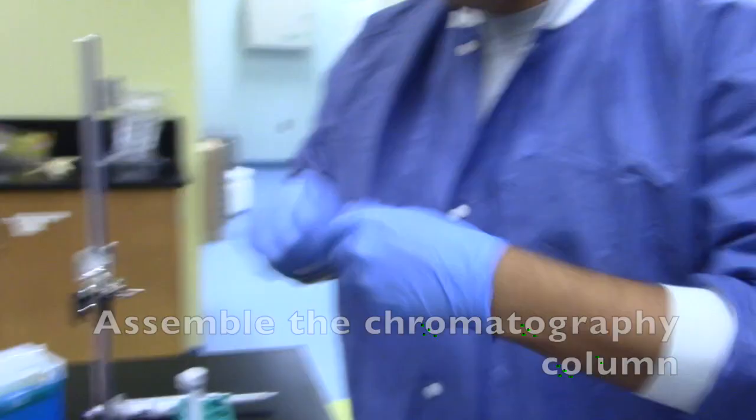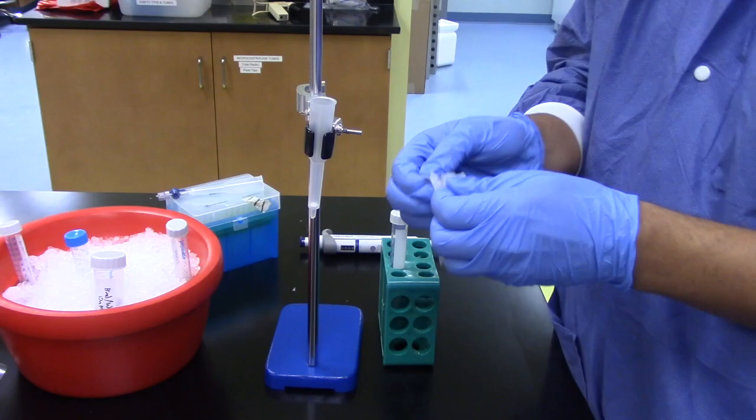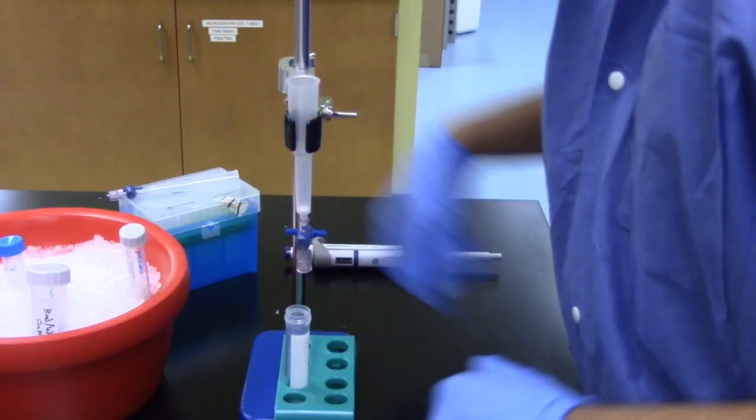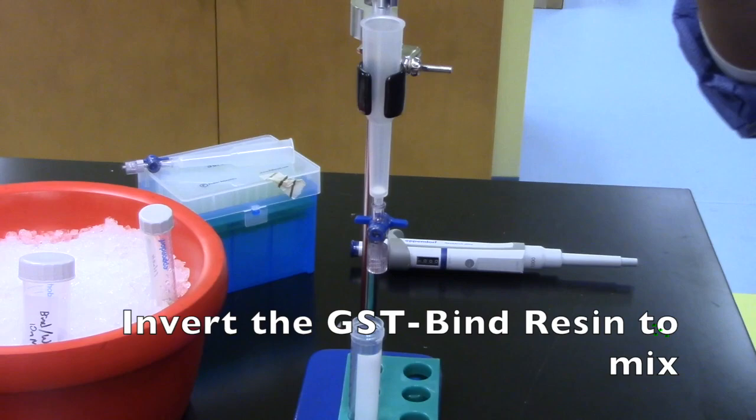Assemble the chromatography column. Invert the GST Bind Resin to mix and add the slurry to the column.